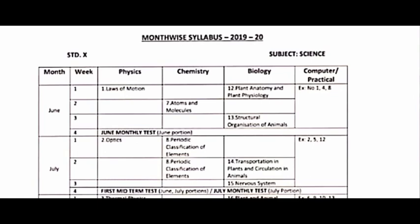Now we are going to talk about the practical lesson. Practical experiment number 148 — this is the experiment for the month of June. For July, the experiments are numbers 2, 5, and 12.